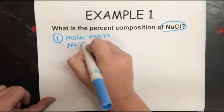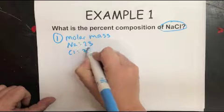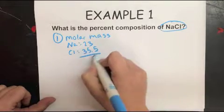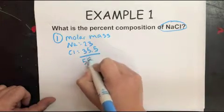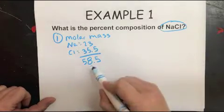So Na is 23, Cl is 35.5. Add those together, you get 58.5. Okay, so that is the mass of the compound.